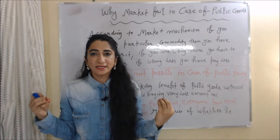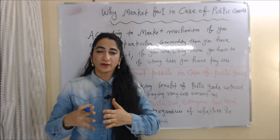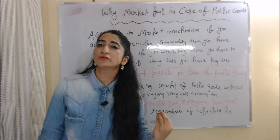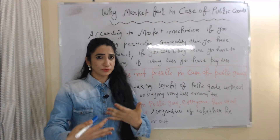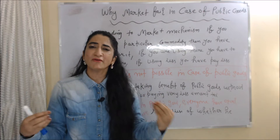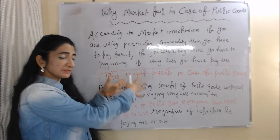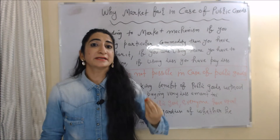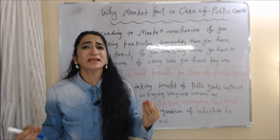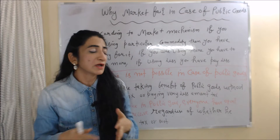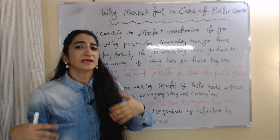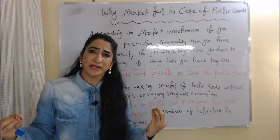Why does the market fail in the case of public goods? According to the market mechanism, if you are using a particular commodity, you have to pay for it — if you use more, you pay more; if you use less, you pay less. But this is not possible with public goods. People take benefit of public goods without paying any tax, or paying very little. For example, police service is a public good — everyone has a right to receive it regardless of whether they are paying tax or not.